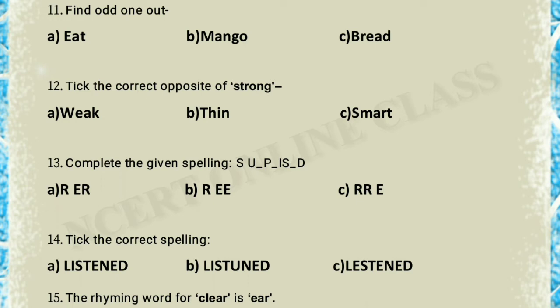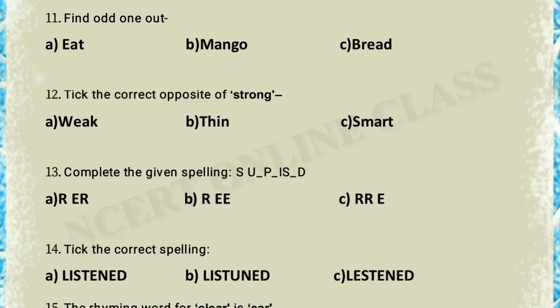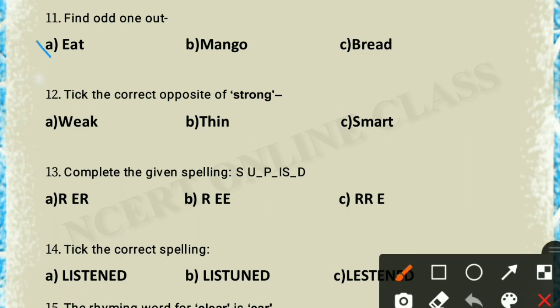Question 11: find the odd one out — go, eat, mango, or bread. Mango and bread are both food items. 'Go' and 'eat' are verbs, but mango is different from the others, so option A — go — is the correct answer.